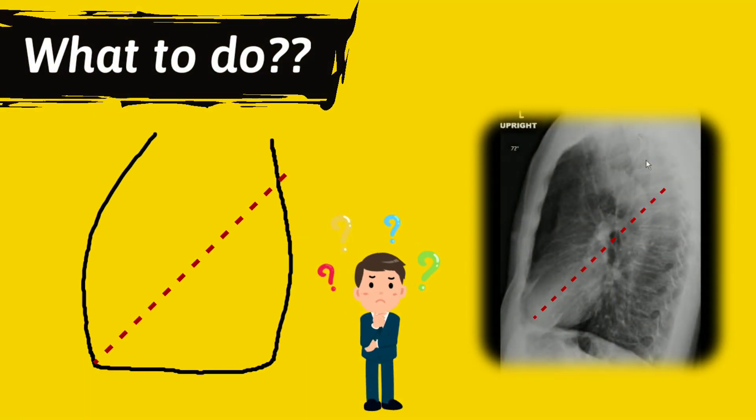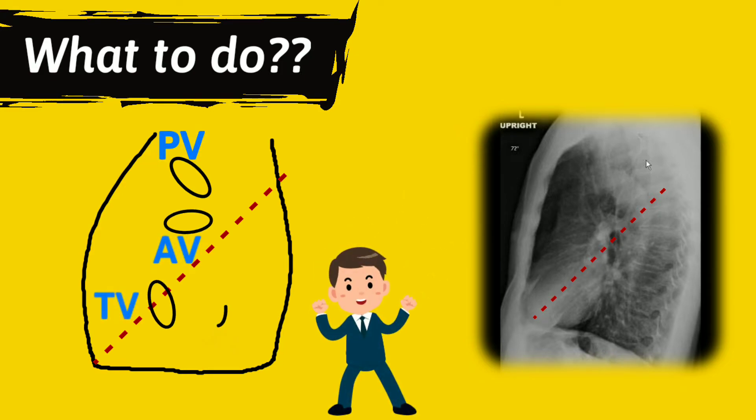The pulmonary valve and the aortic valve lie above that line, but the tricuspid and mitral valve lie below the imaginary line.